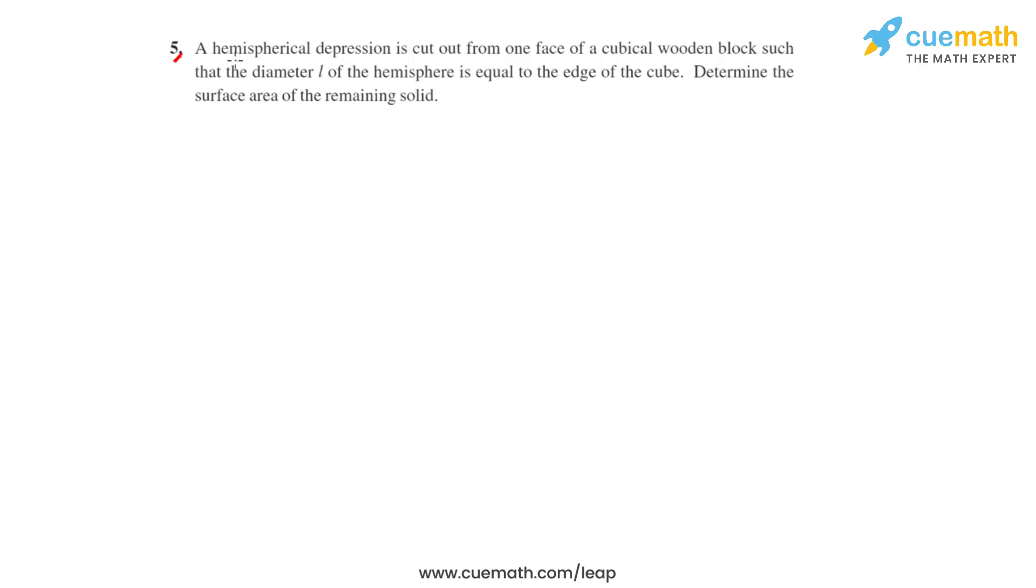Question number five says that a hemispherical depression is cut out from one face of a cubical wooden block such that the diameter L of the hemisphere is equal to the edge of the cube. We have to determine the surface area of the remaining solid.